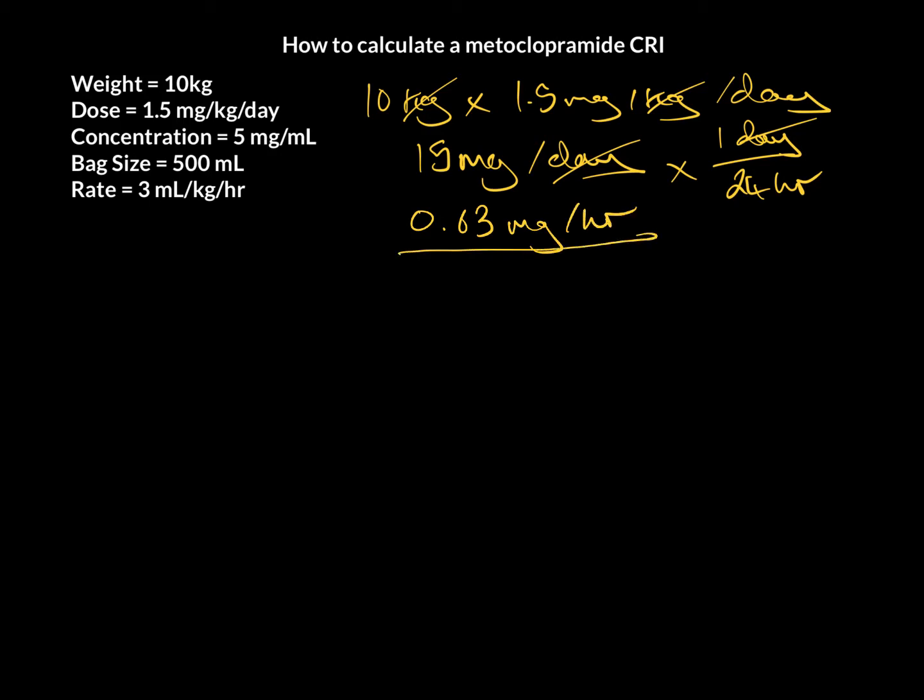So, our little friend here is going to need 0.63 mg per hour of metoclopramide. There's a couple of different ways you can go here. I think what we'll do is we'll now figure out how many mLs per hour our patient needs. So, the concentration that generally is on the shelf is 5 mg per mL, but always double check before you do this. So, to get our mLs, we're going to divide by concentration of 5 mg per mL, and that's going to leave us with 0.13 mL per hour.